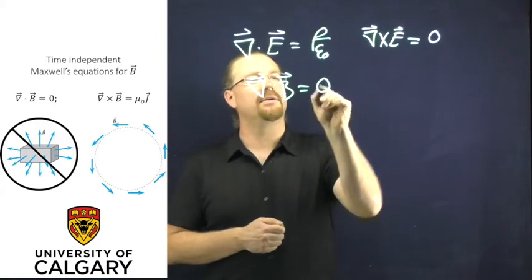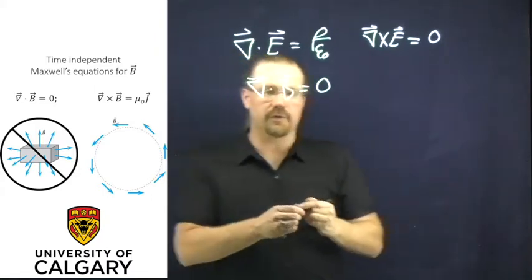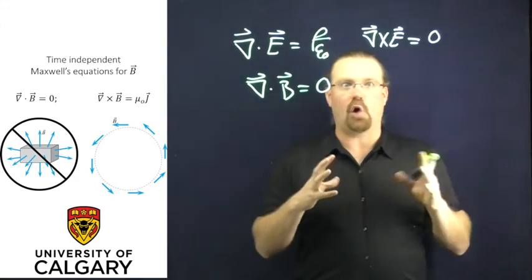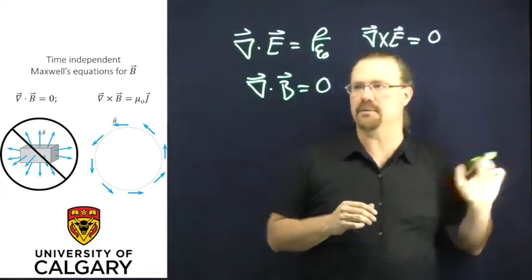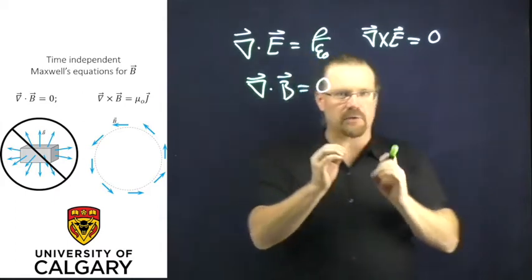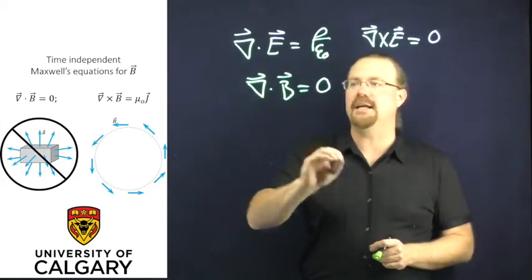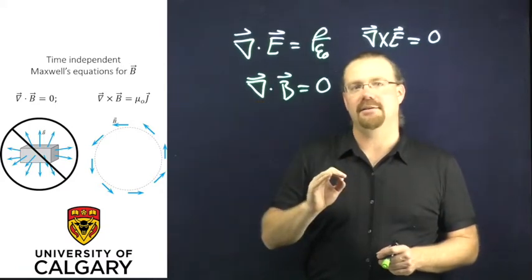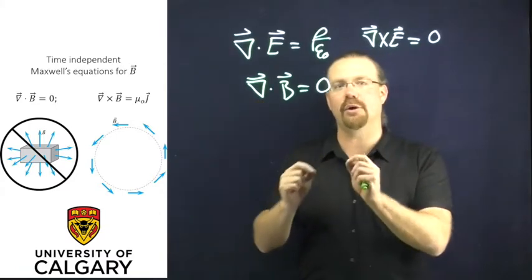And it turns out that this statement, often referred to as no magnetic monopoles, seems to be true all the time, except for one strange experiment which we'll talk about some other time. But in general, for static or dynamic cases, the divergence of B is zero. This means that B is always a solenoidal field.